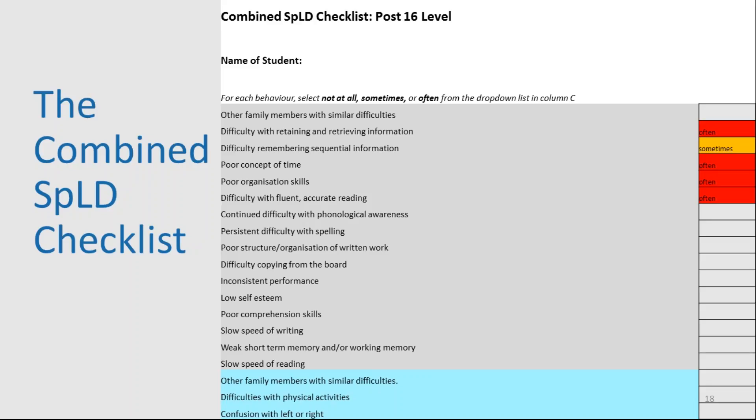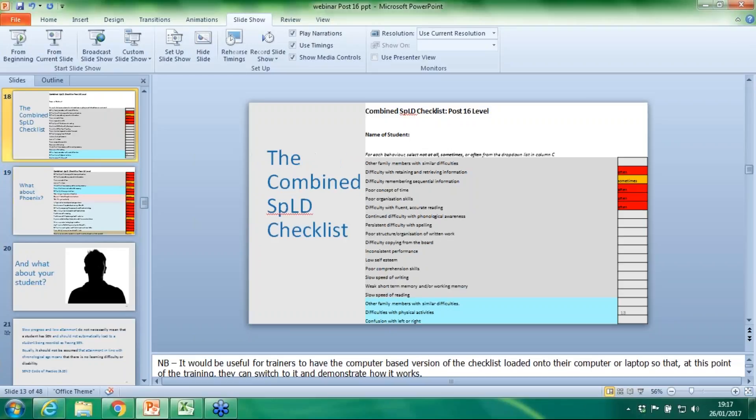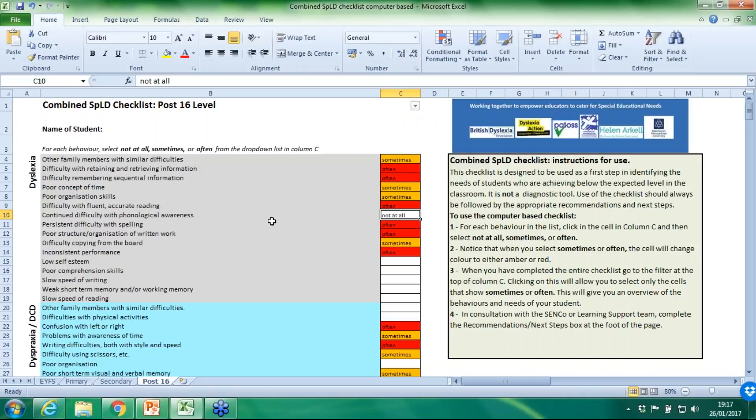When and why should you use a checklist? If you're concerned that a student is not making the expected rate of progress, or is having difficulties with certain aspects of learning, a checklist is a quick, easy-to-use first step in a graduated response — that is: assess, plan, do, review. I'm now going to show you a checklist live in action so you can actually see how it works.